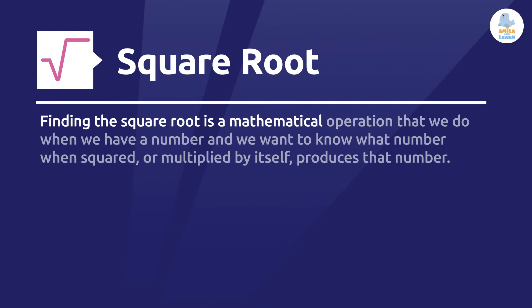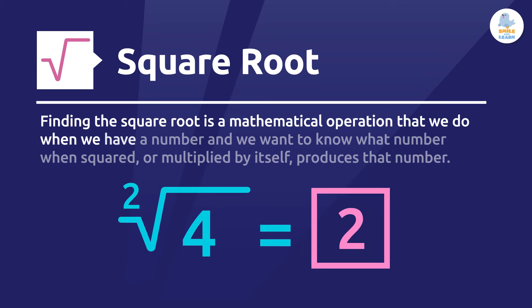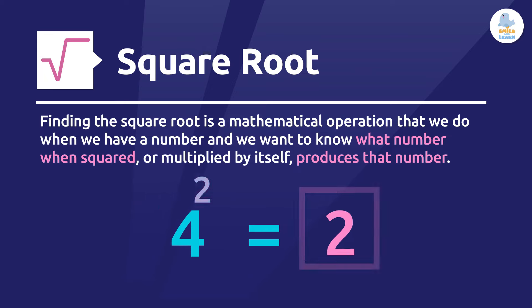Finding the square root is a mathematical operation that we do when we have a number and we want to know what number, when squared or multiplied by itself, produces that number. So, finding the square root is the opposite of squaring a number.